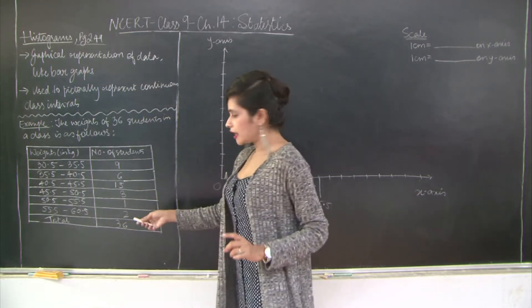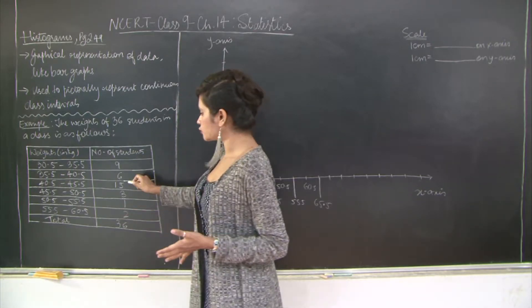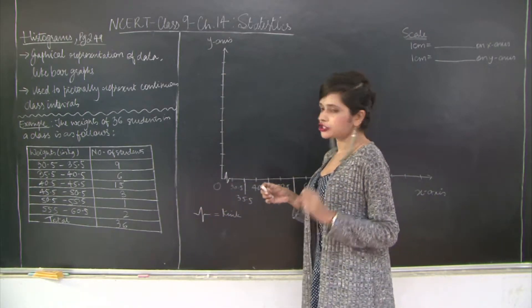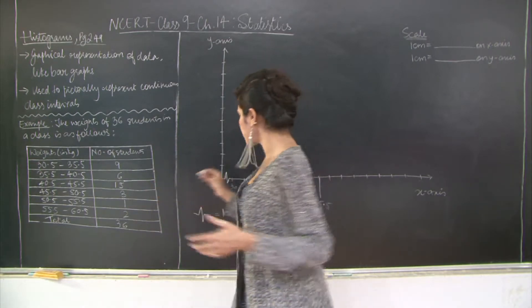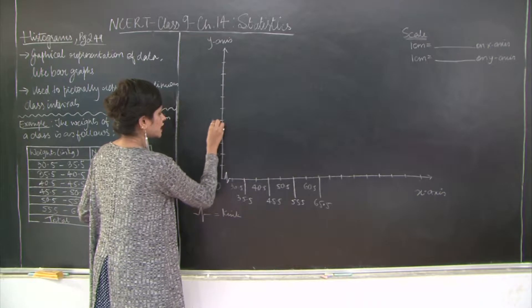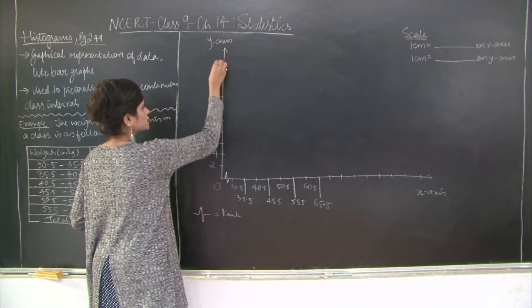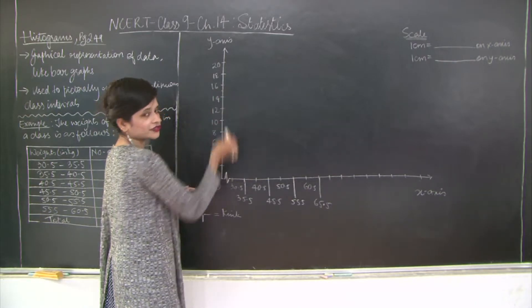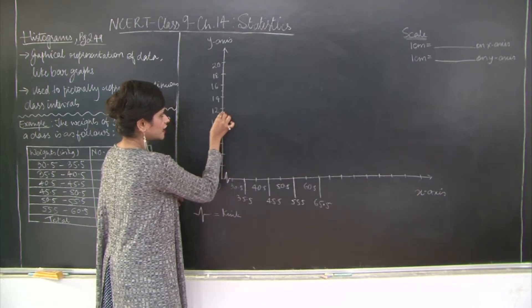Now for the count of students: the lowest observation is 1 and the highest is 15. To plot 15 numbers is not feasible, so I take counts of 2, 2, 4, 6, 8, 10, 12, 14, 16, 18, 20. Fifteen will come here.